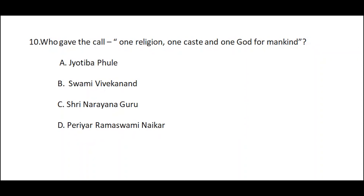Question number ten: Who gave the call 'one religion, one caste, and one God for mankind'? Option A: Jyothi Ba Phule, option B: Swami Vivekananda, option C: Sree Narayana Guru, option D: Periyar Ramaswami Naicker. The correct answer is option C — Sree Narayana Guru.